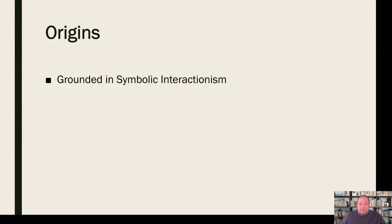The origins of sociological analysis, apart from strictly sociology, have been grounded in symbolic interactionism. Symbolic interactionism refers to the character and content of people's social interactions and how they're influenced by the symbolic meanings that people assign to objects, events, other people, and social contexts.